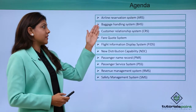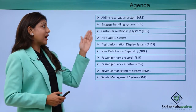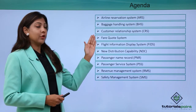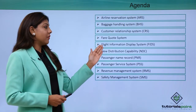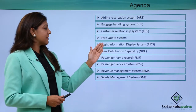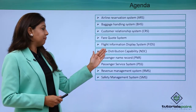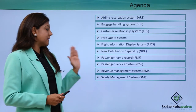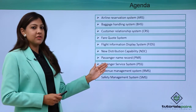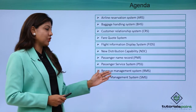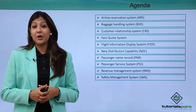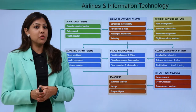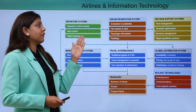Today we are going to talk about the Airline Reservation System (ARS), Baggage Handling System (BHS), Customer Relationship System (CRS), Fare Code System, Flight Information Display System (FIDS), New Distribution Capability (NDC), Passenger Name Record (PNR), Passenger Service System (PSS), Revenue Management System (RMS), and Safety Management System (SMS). We are going to talk about all of these in detail.